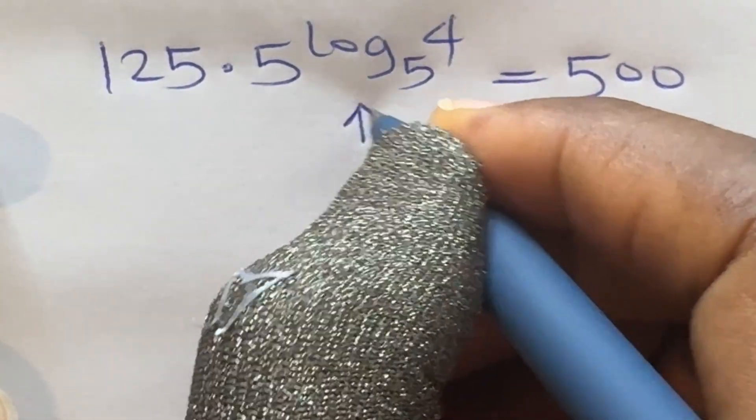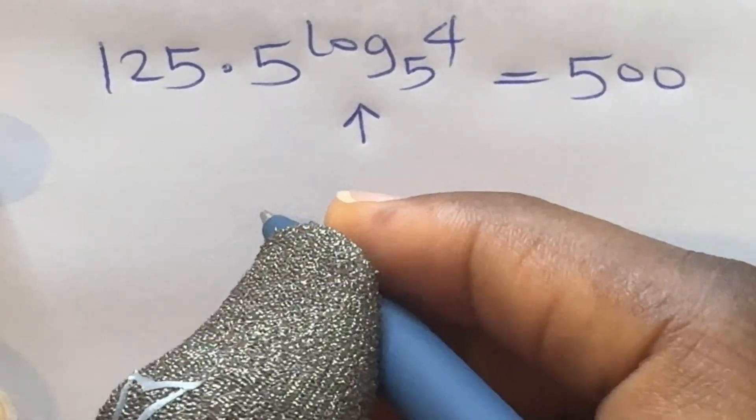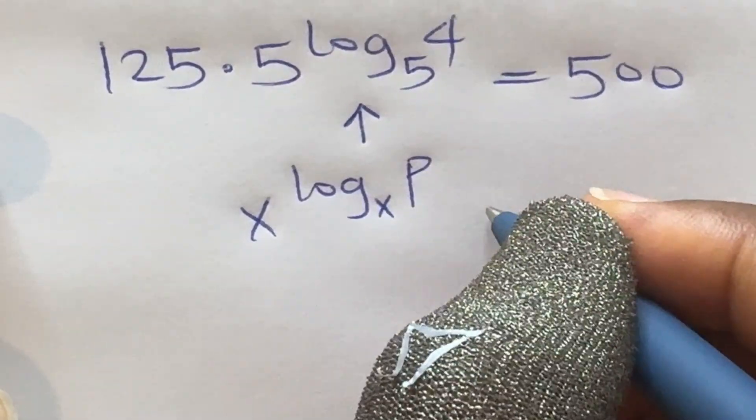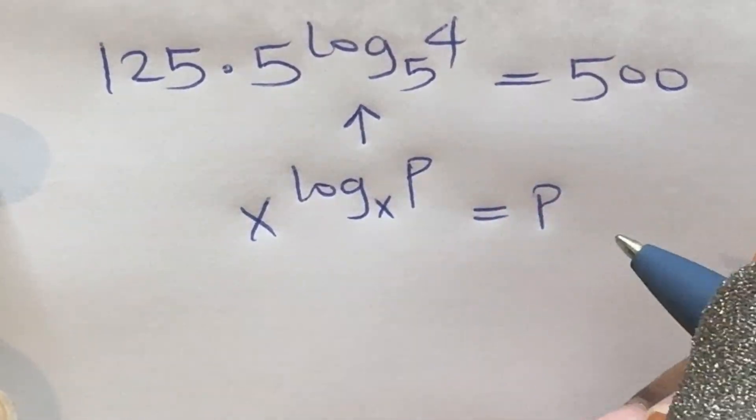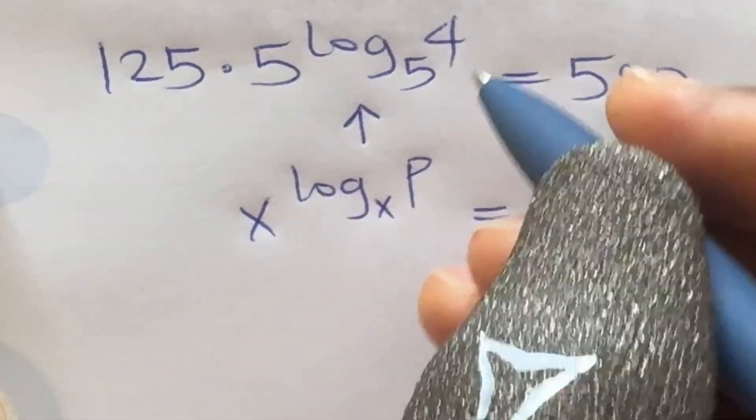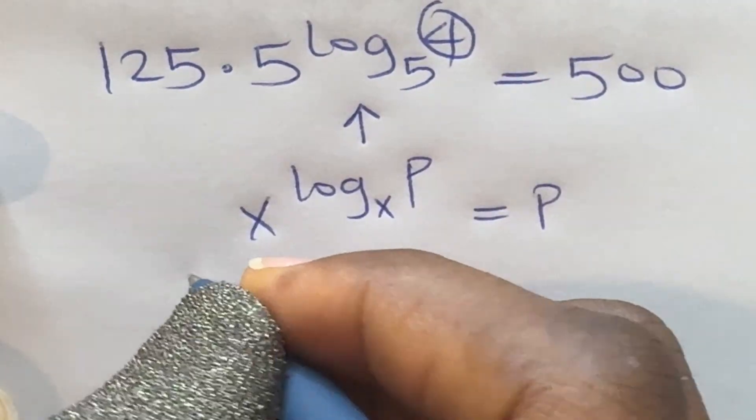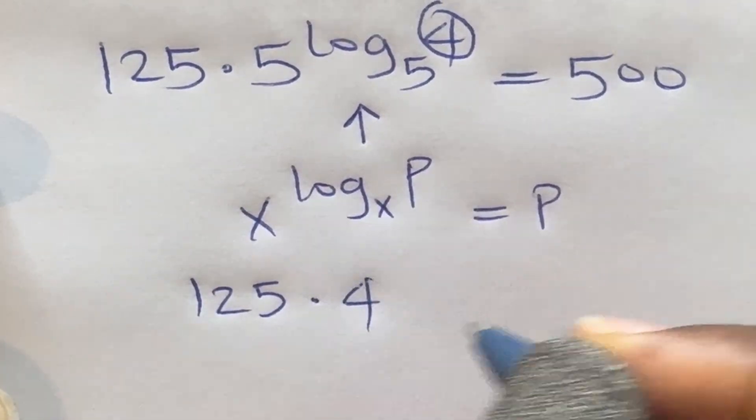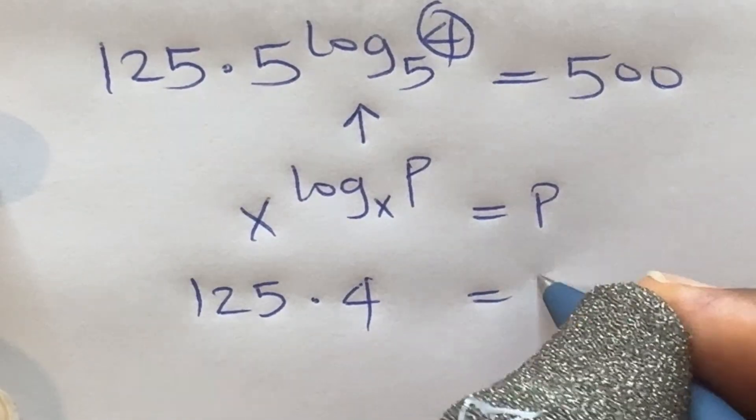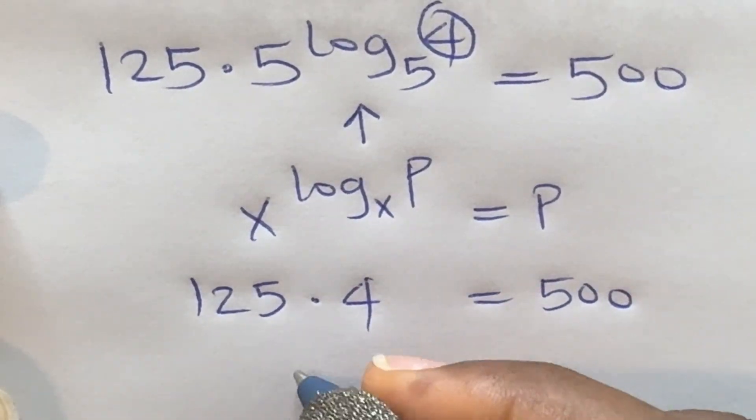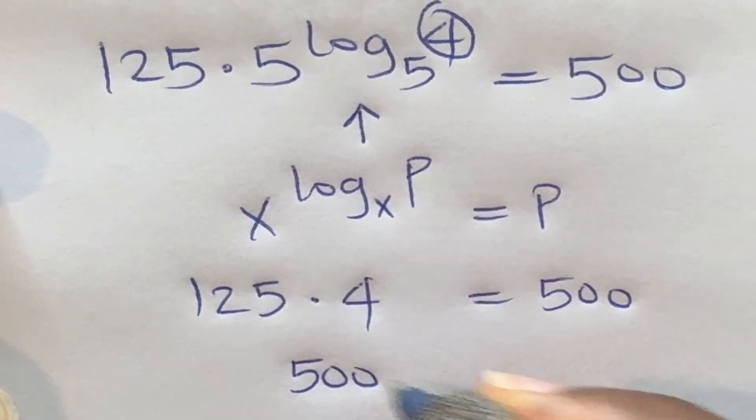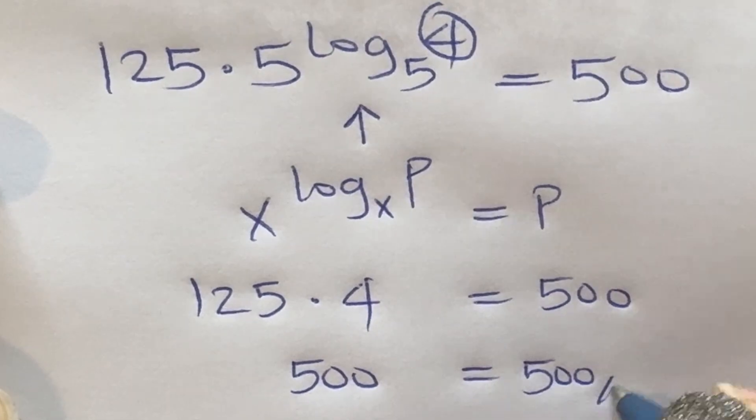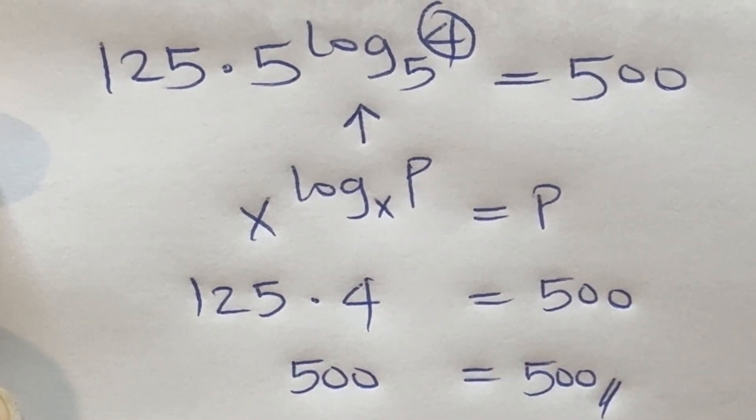This expression is of the form x raised to power log p base x. Therefore we have 125 times 4 is equal to 500. 125 times 4 is 500. Therefore the left hand side is exactly equal to the right hand side, confirming that our solution is correct.